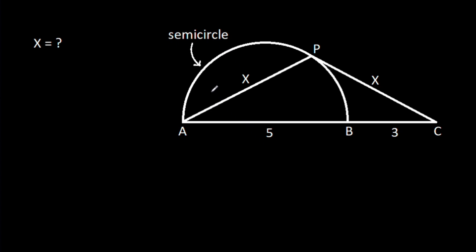In this video, we have been given a semicircle in which AB is 5, BC is 3, and AP is X, CP is X. Then we have to find X.